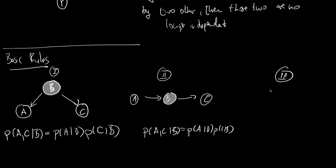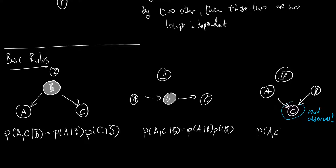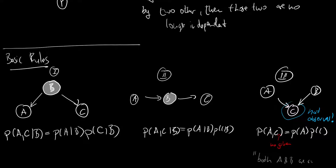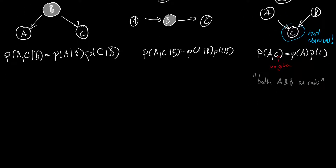The third rule: we have A, B, and C, and importantly C is not observed — this is crucial. In this case, P(A, C) = P(A) × P(C). Note there is no conditioning here. This makes sense because we have marginal independence. This is easily memorizable because both A and C are roots, and in directed graphical models, roots are marginally independent.